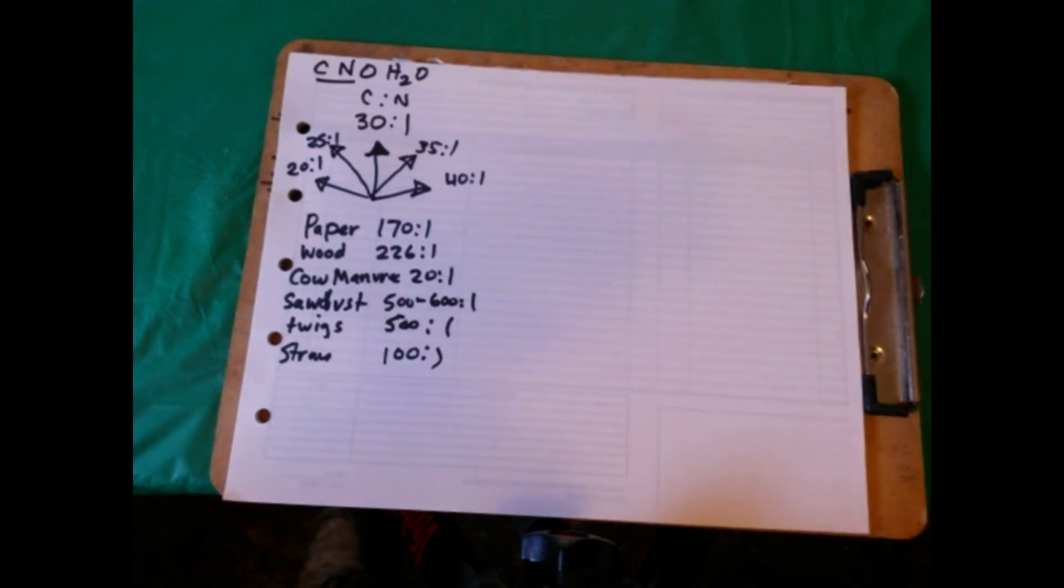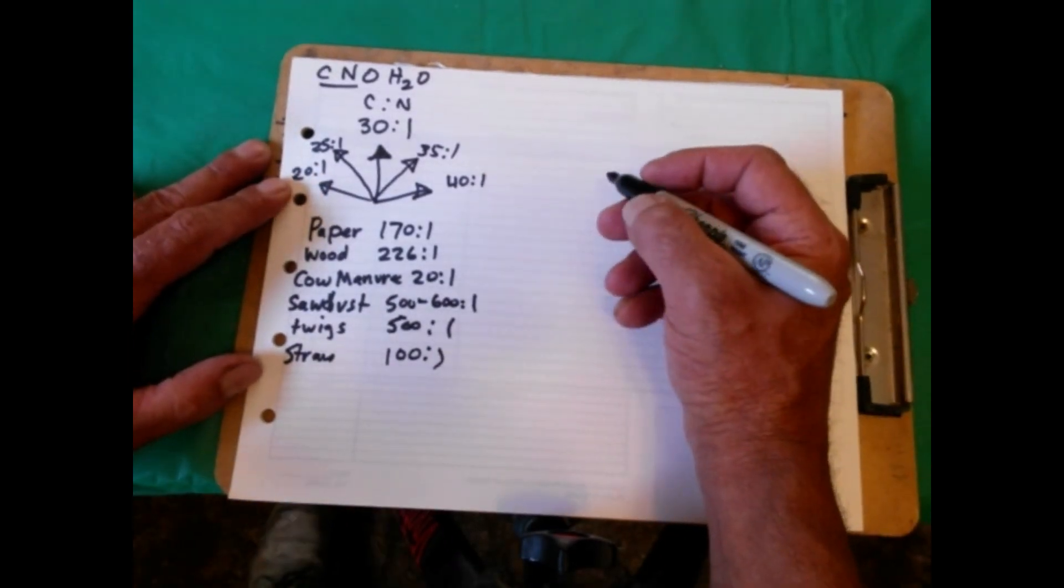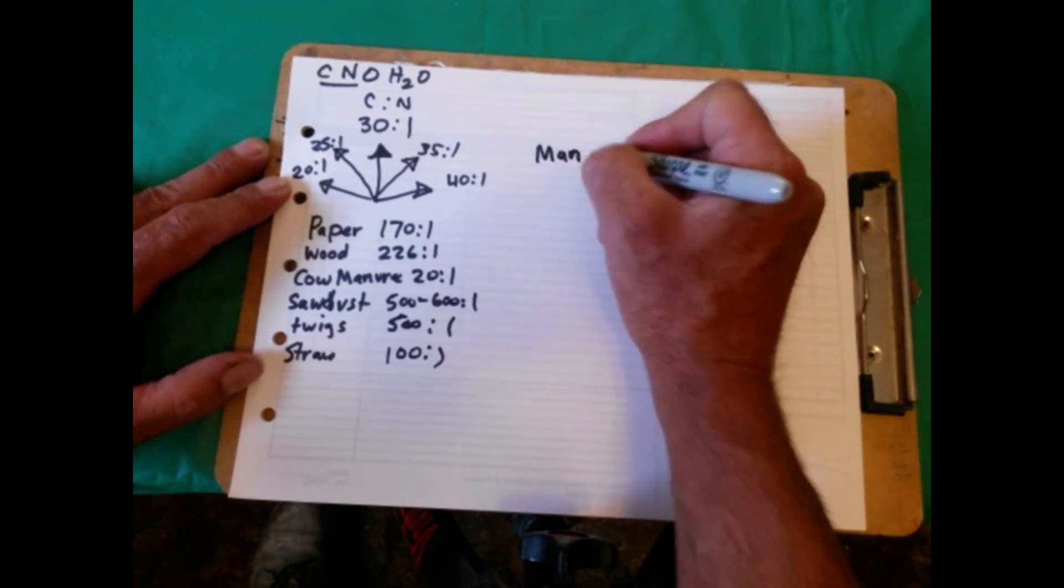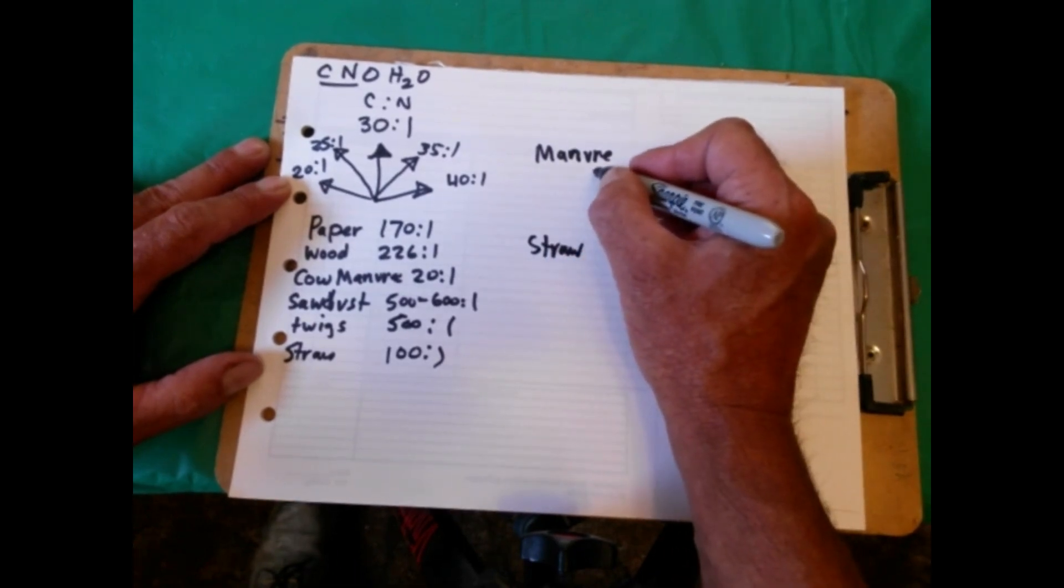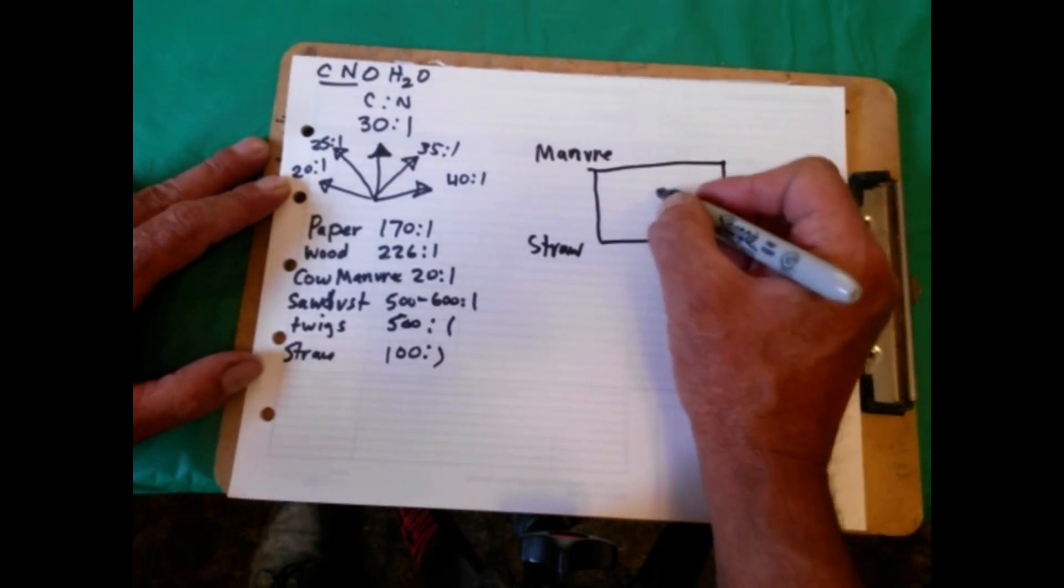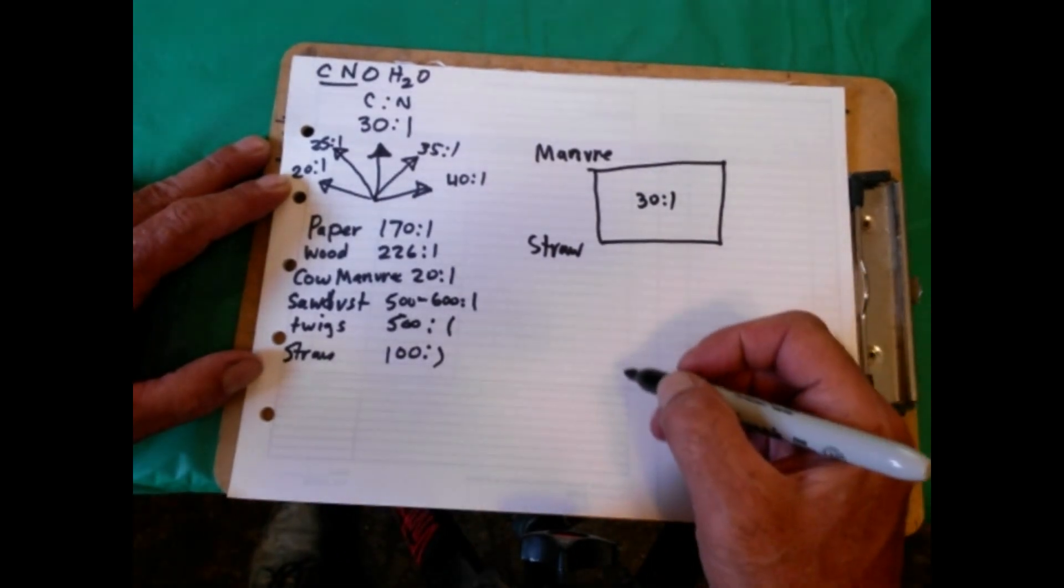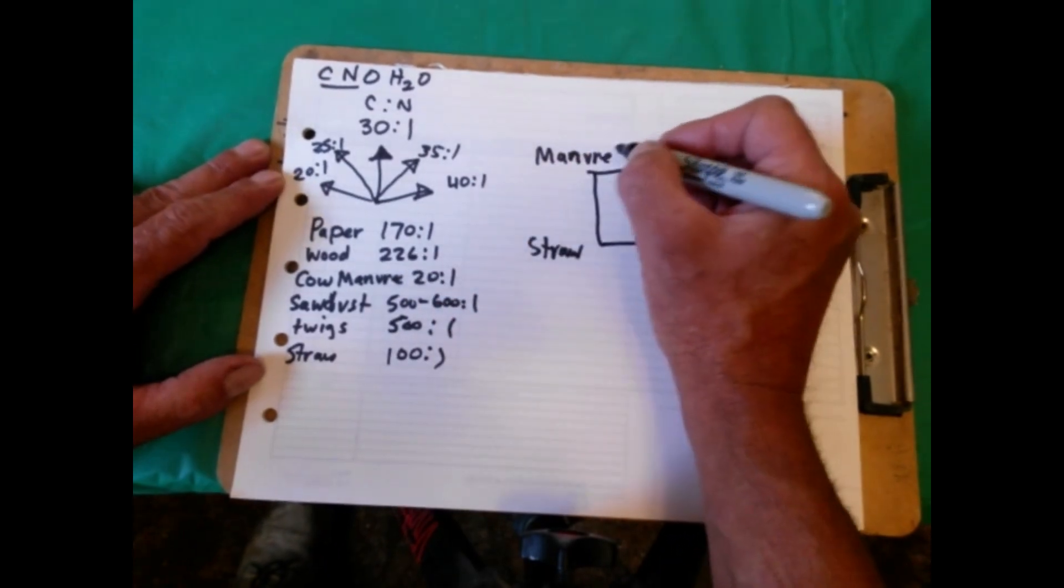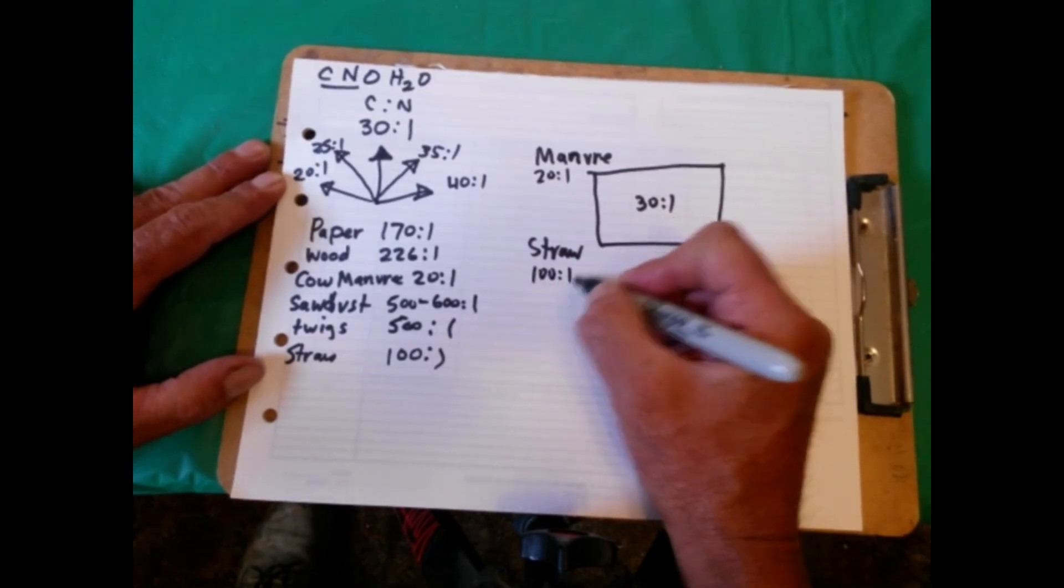What I used is manure and straw. To calculate the proper ratio, we're going to use what I've heard referred to as a Pearson Square. So I'm using manure and straw. We make our square here. On the inside, we put our optimal carbon to nitrogen ratio, which is 30 to one. Manure is 20 to one, and straw is 100 to one.